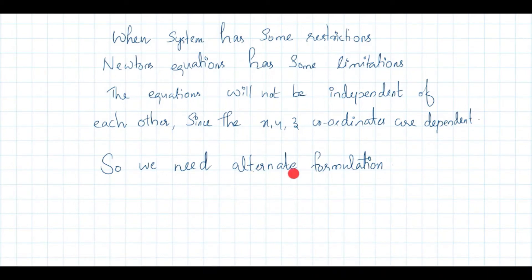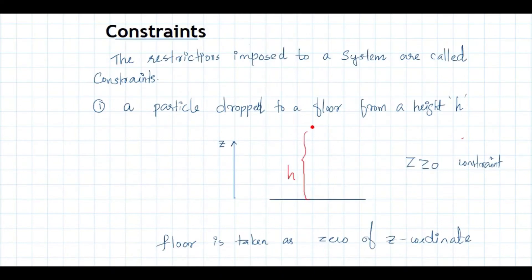Also, when there are constraints there will be associated constraint forces. In Newton's equation, F contains all forces including constraint forces, and it is sometimes difficult to determine these constraint forces. So when there are constraints, using Newton's law becomes difficult and we need an alternate formulation. These are the basic conditions motivating us to move towards analytical mechanics. When there are constraints, Newton's equations are no longer independent, and we need to identify constraints and find an alternate formulation — that is analytical mechanics.